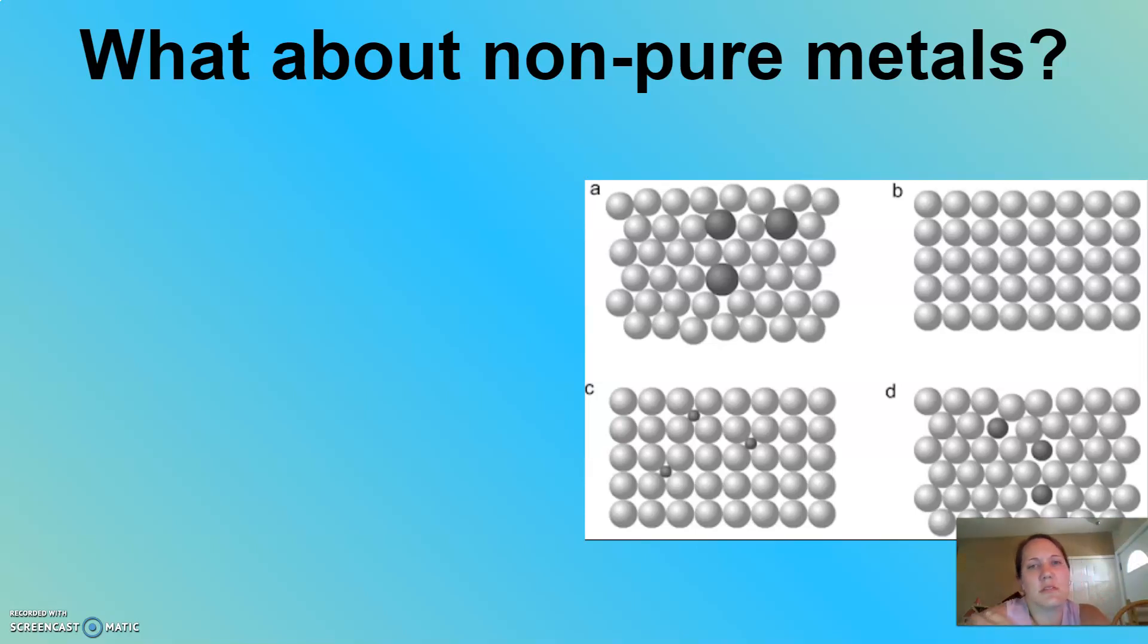But what happens if I take two metals or three metals and put them together? And those are non-pure metals. Those are called alloys.